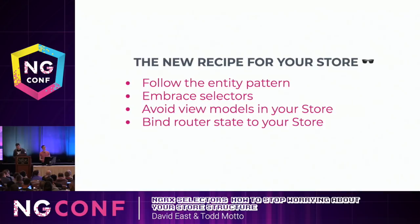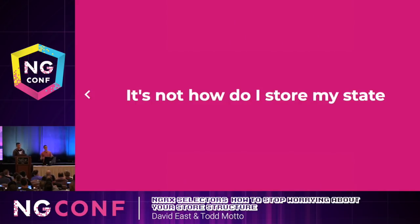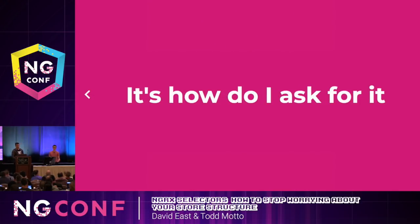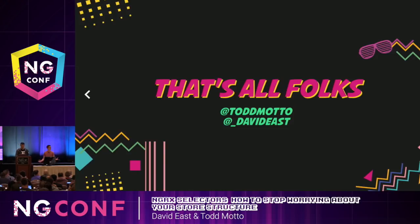So here's the new recipe for not worrying about your store structure: follow the entity pattern, embrace selectors, avoid view models in your store, and use them all together with the router state to really improve your state tree and your selectors. When you're thinking about how to structure your store — it's not how do you structure it, it's how you ask for it. The next time you start an NGRX app or have to refactor a reducer, don't worry about your store structure. Just think selectors first. Thank you very much.